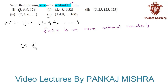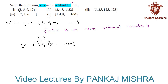The last set given to us is {1, 4, 9, ..., 100}. Here 1 = 1², 4 = 2², 9 = 3², and 100 = 10². If you observe the given elements, you will find that they are the squares of the first 10 natural numbers.